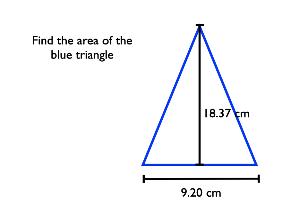If you took a second and you calculated this out, hopefully you remembered that the area of a triangle is one-half the base times the height, or base times height over 2. So we're going to plug our numbers in. Area is one-half, 9.20 centimeters, times 18.37 centimeters.